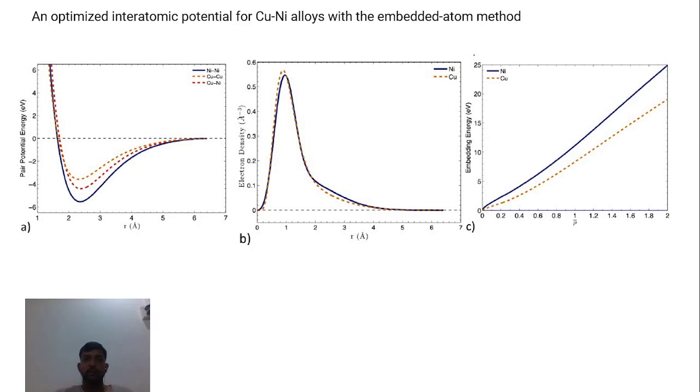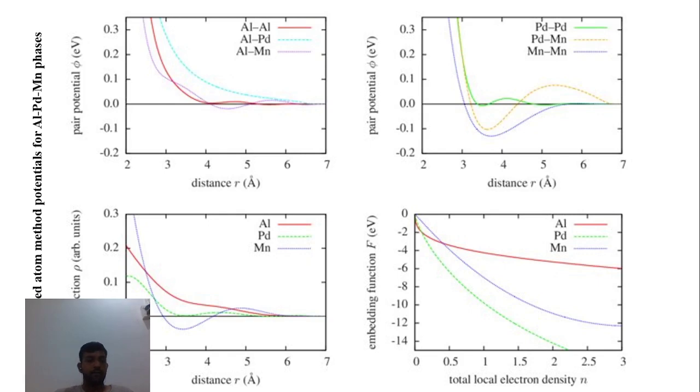Next, suppose we have a potential which contains three types of atoms. If you see, pairwise potential is six, which is simple if you have three types of different atoms - you have cross terms. For embedding functions, we need three. The electron cloud density is also three types. In total, it is 12 functions.